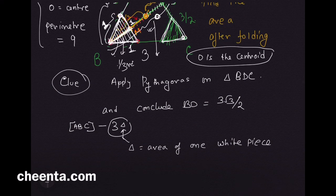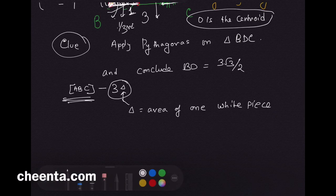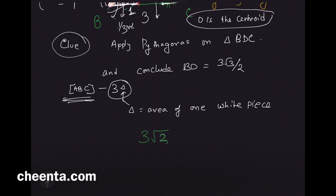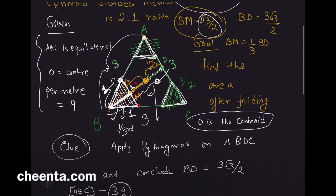Multiply that by three and delete it from triangle ABC's area. The final answer is 3√3/2. This is the area of the folded piece of paper, the hexagon, after you have deleted all the triangles.